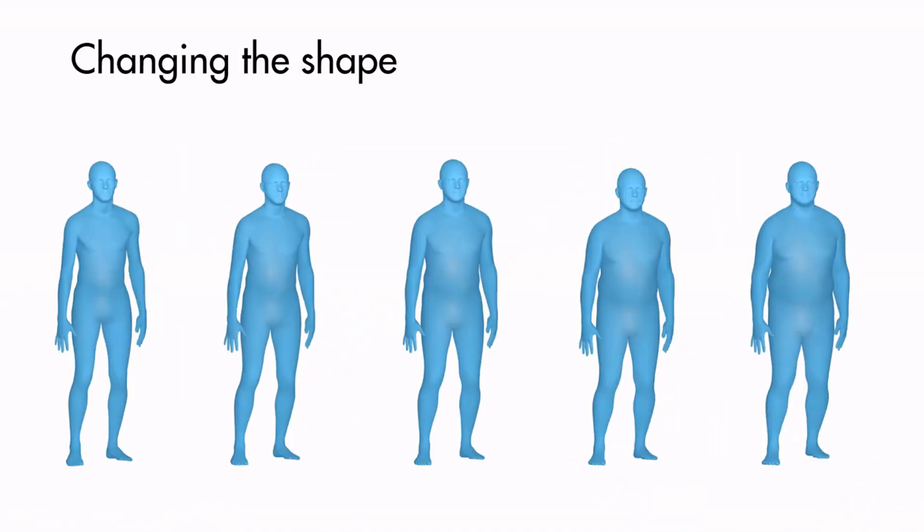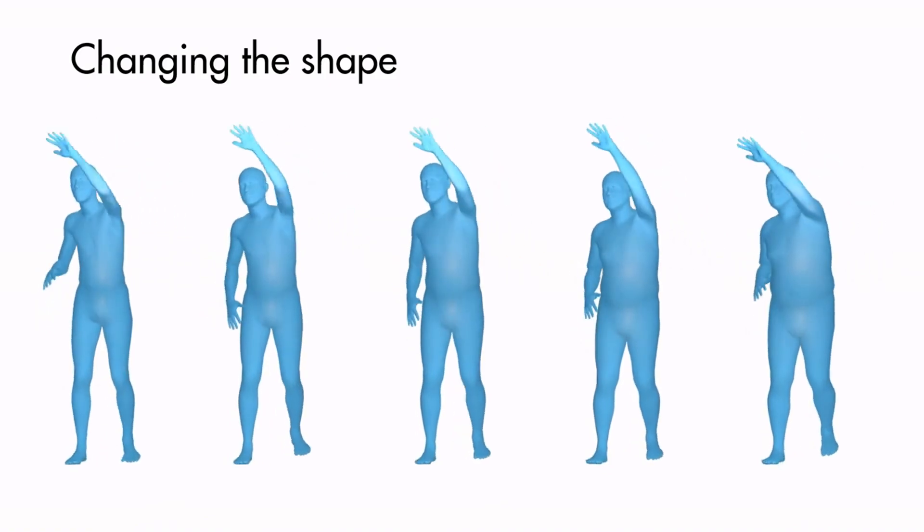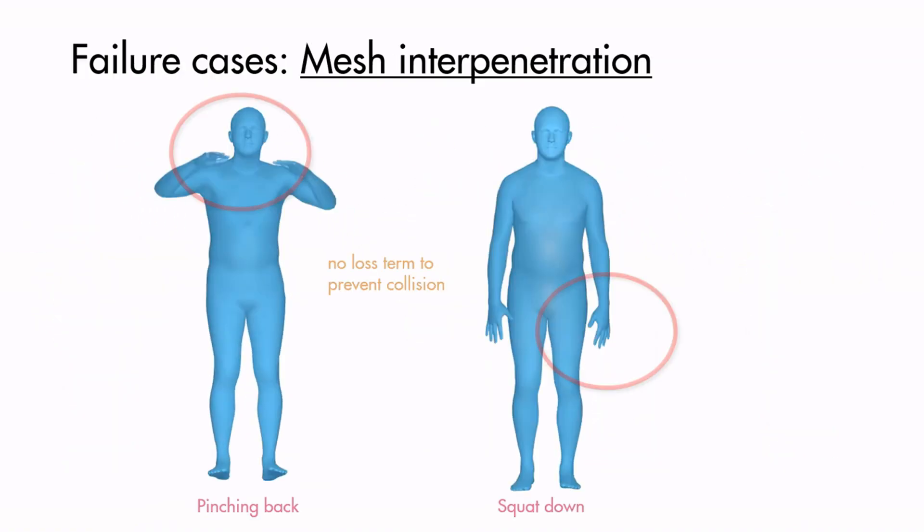At test time, by using a different SMPL body shape, we can produce different outputs with the same sequence of poses. But since we did not employ a loss to prevent collision, we might have mesh interpenetration in the output.